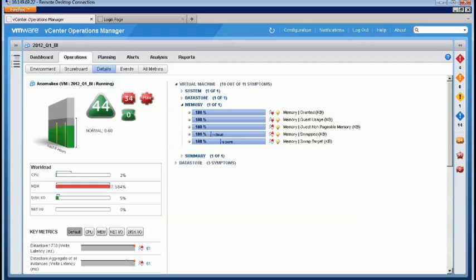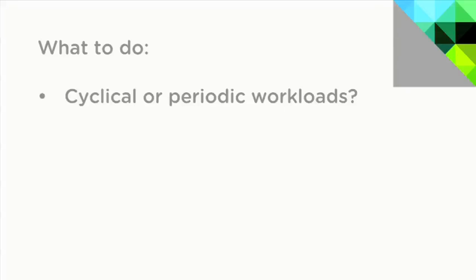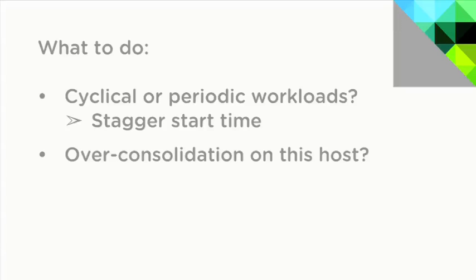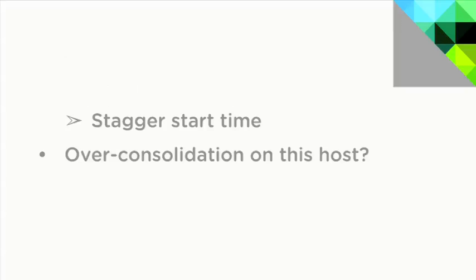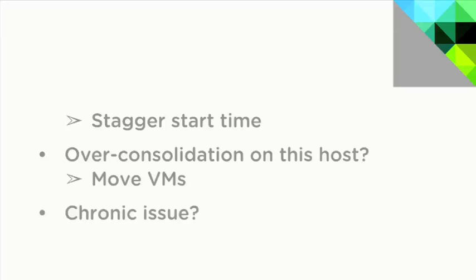So what do we do next? The first step is to determine whether these are cyclical or periodic workloads that are otherwise idle. If so, we should stagger the start times if possible to alleviate the performance issues. Another consideration is whether we have overconsolidated on this particular host — too many VMs will create population pressure. If this is the case, we should consider moving our VMs to hosts with lesser workloads.